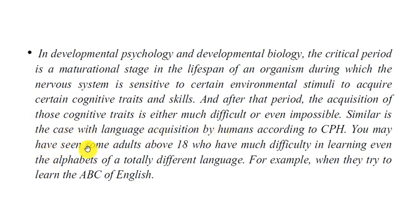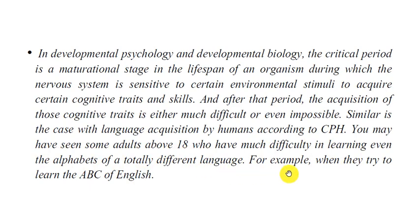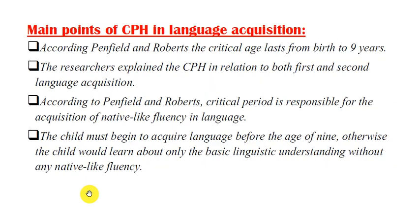Similar is the case with language acquisition by humans. According to the critical period hypothesis, you may have seen some adults above 18 who have much difficulty in learning even the alphabet of a totally different language — for example, when they try to learn the ABC of the English language.